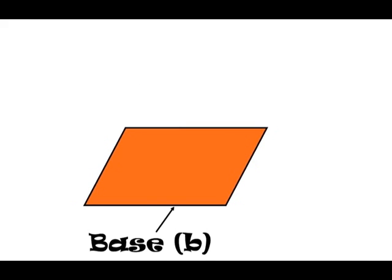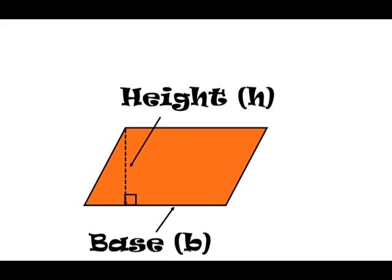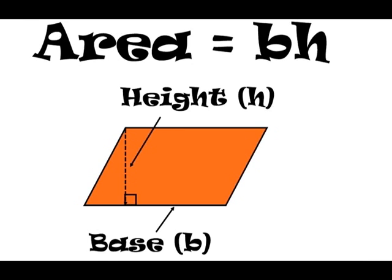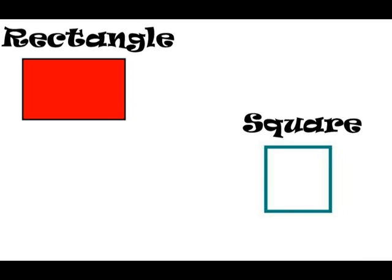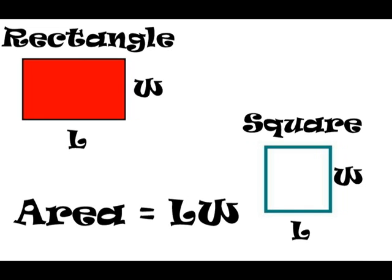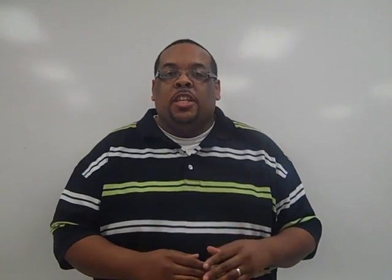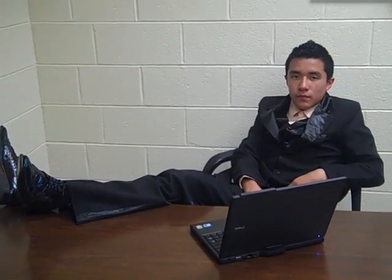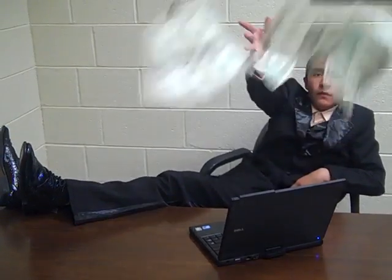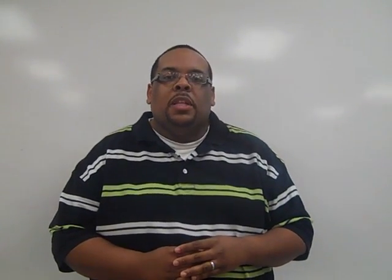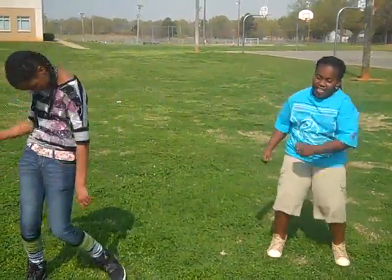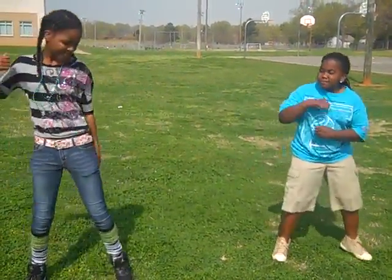First take the base, then take the height. With both of these numbers, just multiply. It's the same with the rectangles, or with the square. But we call that length and width, in case you weren't aware. If you learn it, I swear, for the O.G., you'll be prepared. You might go to college, get a job, and be a millionaire.